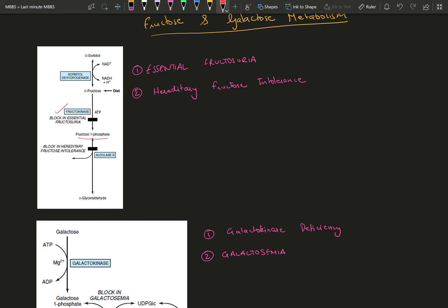Deficiency of this enzyme is going to cause essential fructosuria, which means fructose is not going to stay within any cell and it's going to be excreted by the urine. Very fatal condition and very damaging to the kidneys.